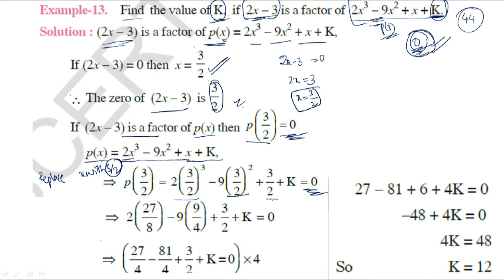Now we solve: 2 × (3/2)³ = 2 × (27/8) = 27/4. And 9 × (3/2)² = 9 × (9/4) = 81/4. So we have: 27/4 - 81/4 + 3/2 + K = 0.